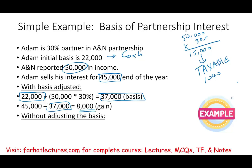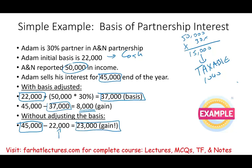Now let's assume Adam did not adjust his basis. He would subtract his $22,000 initial contribution from $45,000, producing a gain of $23,000. Notice the difference — if he didn't adjust his basis, he'd pay taxes on $23,000. But he already paid taxes on the $15,000 income that flowed through to his 1040. There can be timing differences of several years, which is why you must adjust your basis to avoid double taxation.